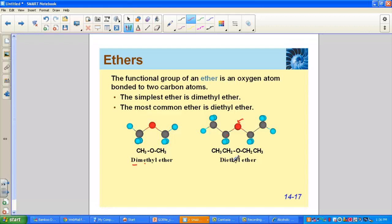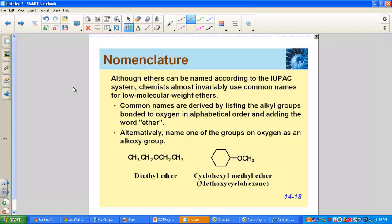The functional group of an ether is an atom of oxygen bonded to two carbon atoms. This structure is showing us dimethyl ether and diethyl ether.